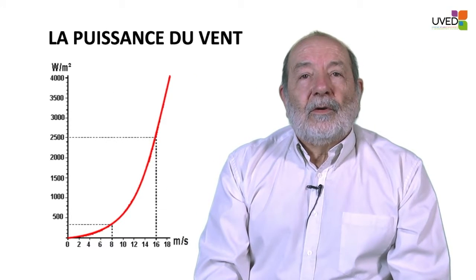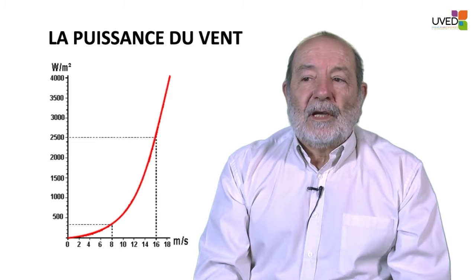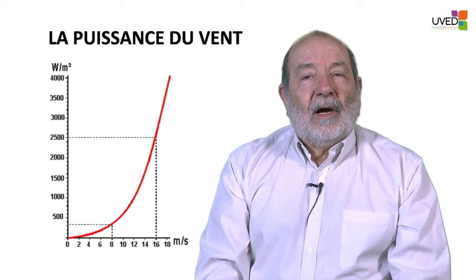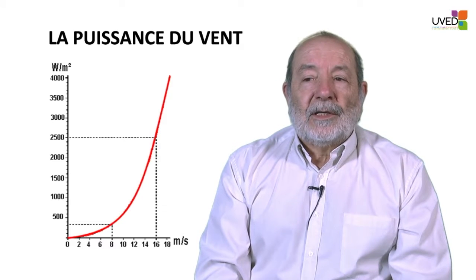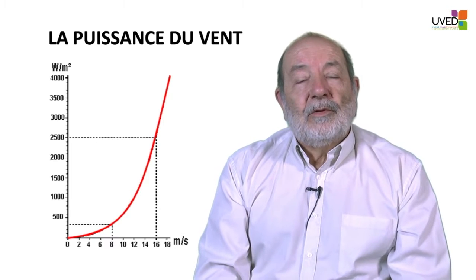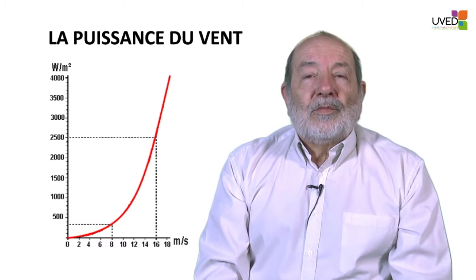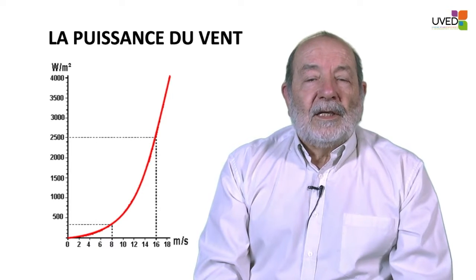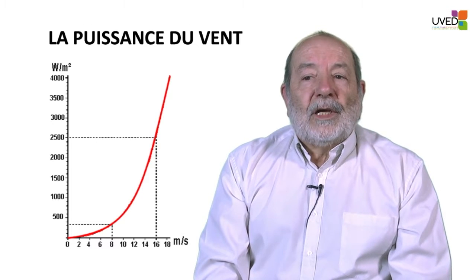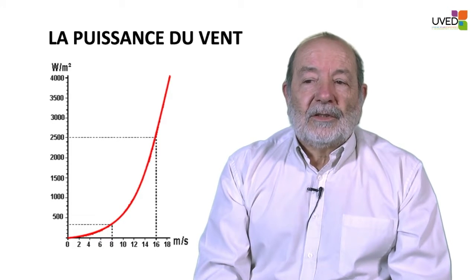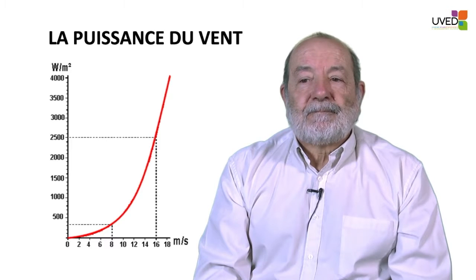On the figure, we see the evolution of this power based on wind velocity. The power increases very quickly with wind velocity. If we multiply the wind velocity by 2, the power is multiplied by 2³, which equals 8. In the previous example, 3 megajoules of kinetic energy corresponds to a power of 3 megawatts, which would supply energy for 600 to 900 houses.